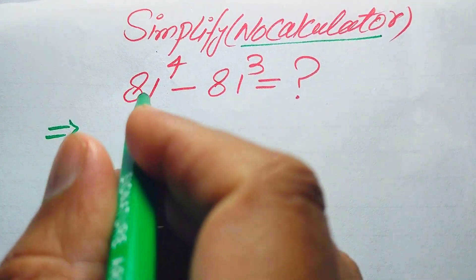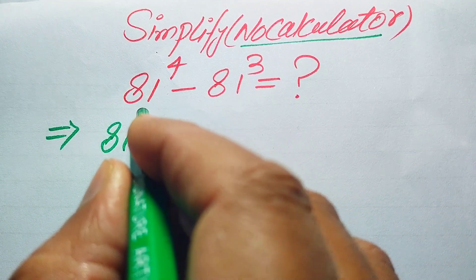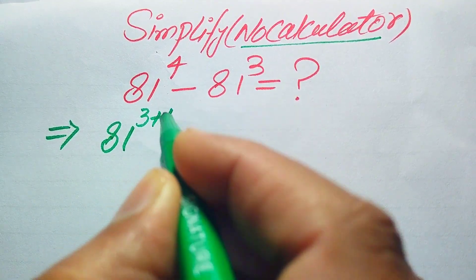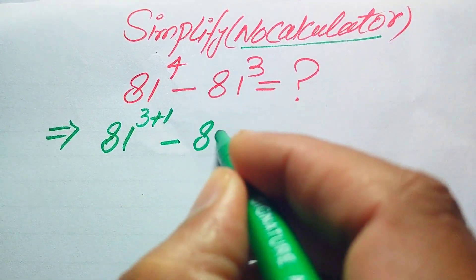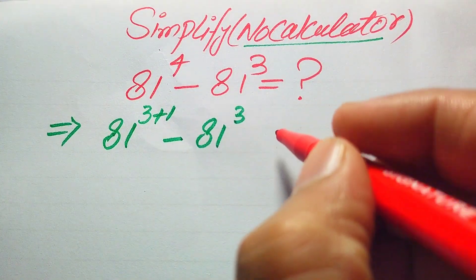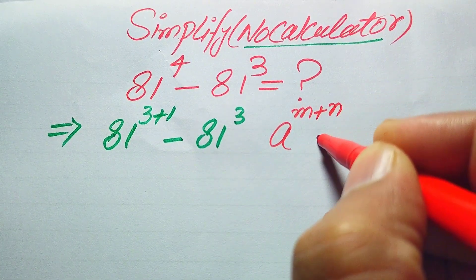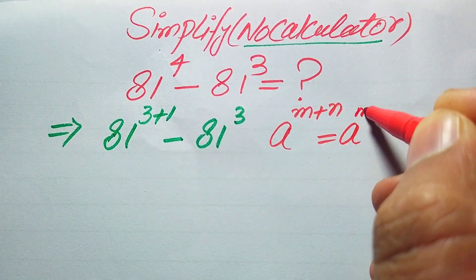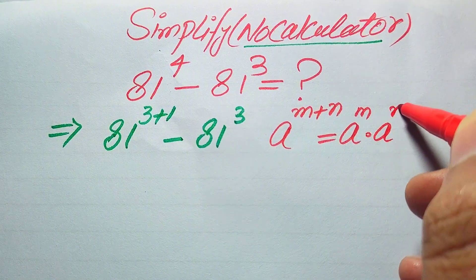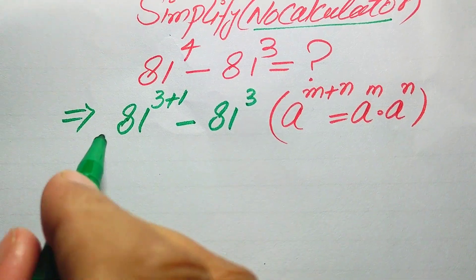First, we focus on the exponent of the first term and rewrite 81⁴ as 81 to the power of (3+1) minus 81 to the power of 3. We use the algebraic rule that a to the power of (m+n) equals a to the power of m multiplied by a to the power of n.